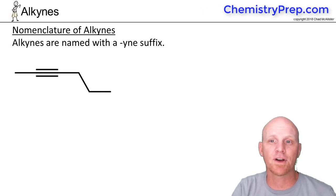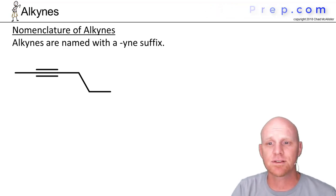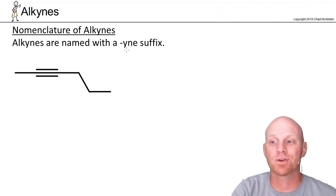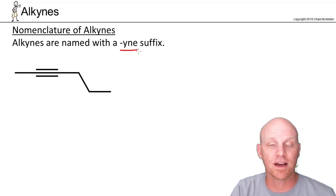We're going to start off this chapter on alkynes with nomenclature of alkynes, and it's in some ways similar to alkenes. We're going to name it as part of the parent chain using the suffix -yne. So instead of saying pentane for alkanes or pentene for an alkene, we're going to say pentyne for the alkyne.